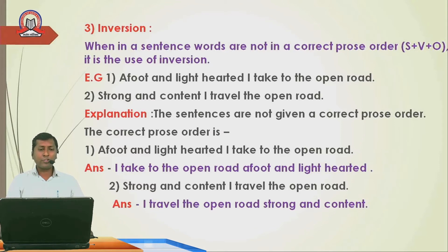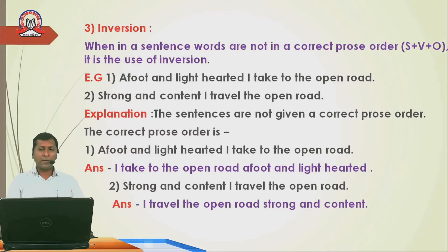Another example of inversion: 'Strong and contained, I travel the open road.' The correct order is: 'I travel the open road, strong and contained.' So in this poem, the poet uses different sentence structures and sometimes avoids the proper subject-verb-object order. This is the example of inversion.